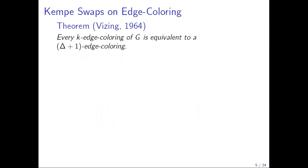Using Kempe swaps, if you start from any k-edge coloring of your graph, you can reach a delta-plus-one edge coloring. This means there is a sequence of Kempe swaps to transform your k-edge coloring into a delta-plus-one edge coloring. Vizing proved that to show you only need delta-plus-one colors, you just delete color classes one after the other in the process using these swaps.